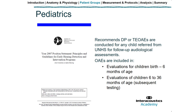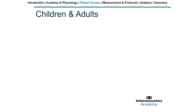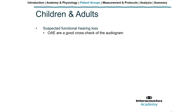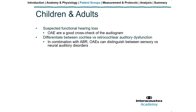The JCIH 2007 position statement also recommends that OAEs are conducted for any child referred from a universal newborn hearing screening for a follow-up audiological assessment — for children from birth to six months of age and for subsequent evaluations of children from six to 36 months of age. For children and older adults, OAEs can be great as a cross-check, particularly in patients suspected of having a functional hearing loss. We can use OAEs to cross-check our audiogram and to differentiate between cochlear and retrocochlear auditory dysfunction, helping distinguish between a sensory hearing loss and a neural auditory disorder.